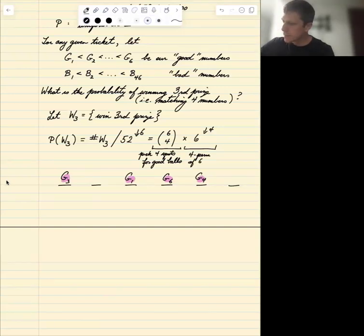Finally, we need to put two bad balls in here, in these remaining two spots. So a bad ball and a bad ball, doesn't matter which one. Say it could be bad ball 21 and bad ball 10. So this is now a two permutation of 46.